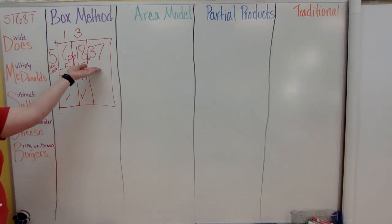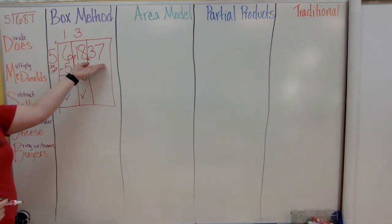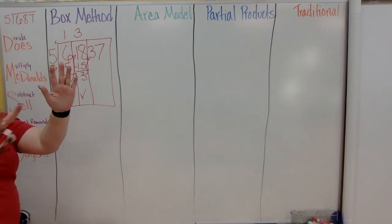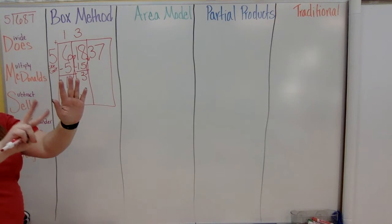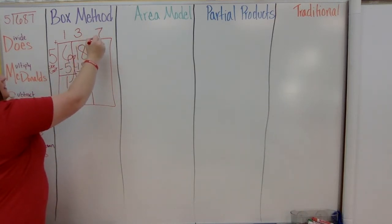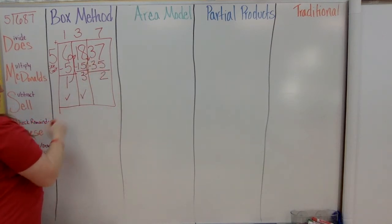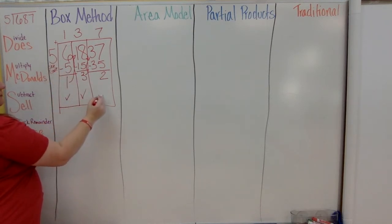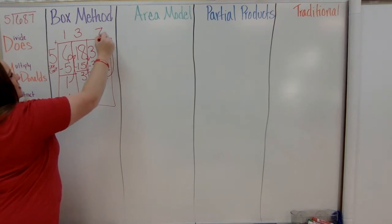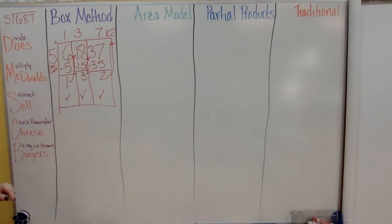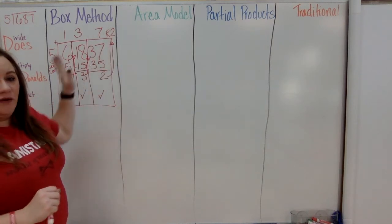Now I have 37. Is 37 enough to give my five friends M&Ms? Yes. Skip count: 5, 10, 15, 20, 25, 30, 35 — going to 40 is too much, so it's 7 that goes on top. Multiply: 7 times 5 is 35. Subtract: 37 minus 35 is 2. Check: is 2 smaller than 5? Yes. Bring up — this 2 becomes remainder 2. So the answer is 137 remainder 2.